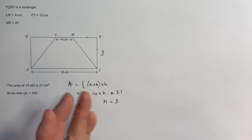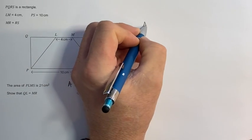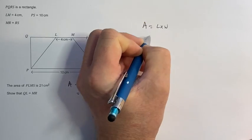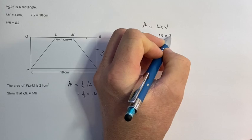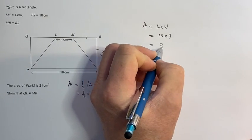Now the area of a rectangle is quite simply length times width, so that would be 10 times 3, which is 30.